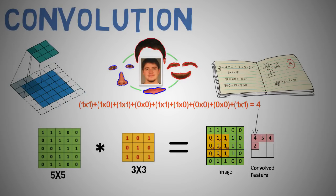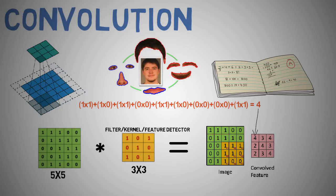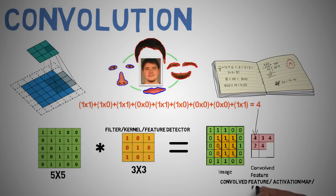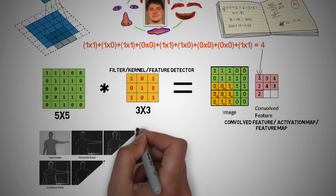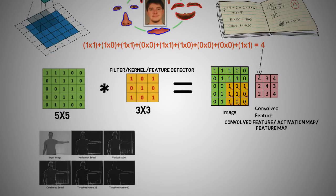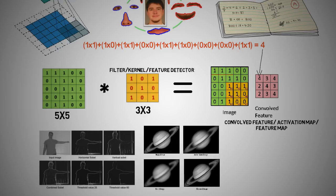In CNN terminology the 3 by 3 matrix is called a filter, also known as a kernel and also a feature detector. The matrix formed by sliding the filter over the image and computing the dot product is also called a convolved feature, activation map or the feature map. It is important to note that filters act as feature detectors from the original input image. We can see over here that different values of the filter matrix will produce different feature maps for the same input image. We can perform operations such as edge detection, sharpening and blur just by changing the numeric values of our filter matrix before the convolution operation.